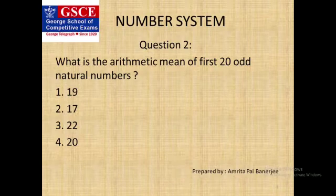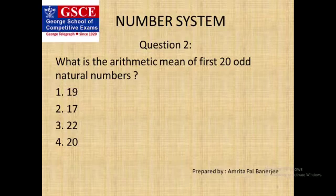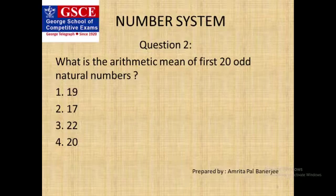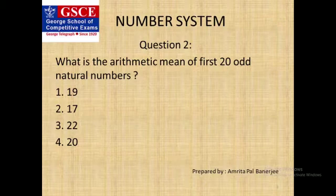Now the second question: what is the arithmetic mean of the first 20 odd natural numbers? This is basically an AP series — arithmetic progression. To find the average of an AP series, we need to apply the formula: (first number + last number) divided by 2. The correct option is option 4.